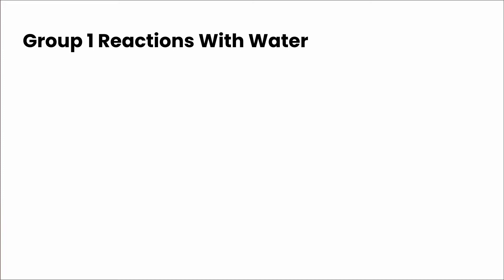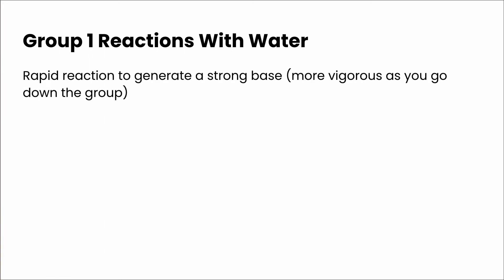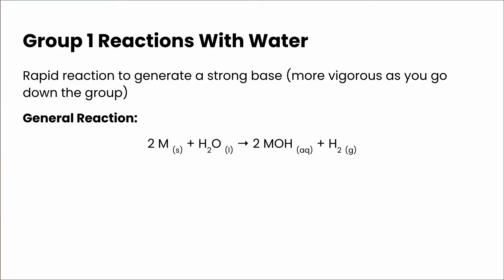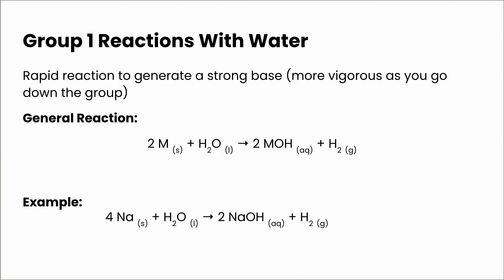Alkali metals also react with water — we'll take a look at these reactions when we do our trends lab — but when we drop any alkali metal in water it reacts pretty vigorously. It's more vigorous as you go down the group and this reaction generates a very strong base. The general reaction is 2 metal + 2 water → 2 metal hydroxide + hydrogen gas. This is a single displacement reaction. For example, with sodium: 4 sodium + water → 2 sodium hydroxide + hydrogen gas.